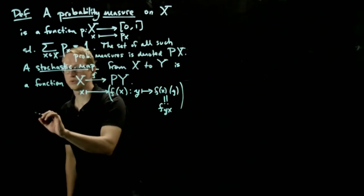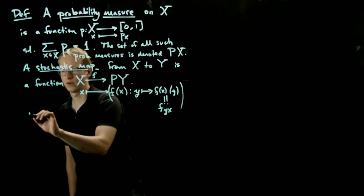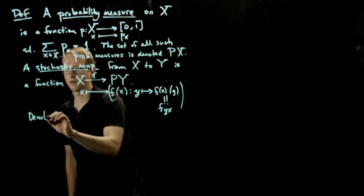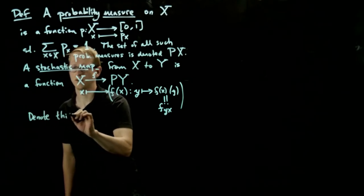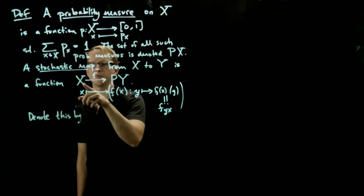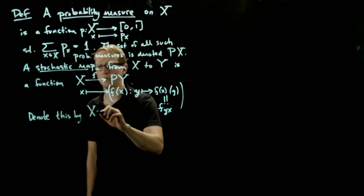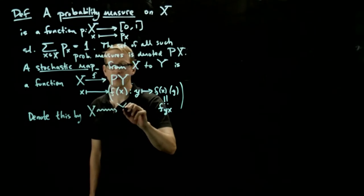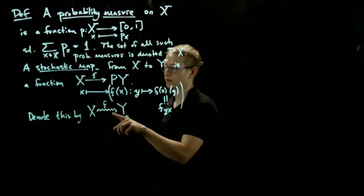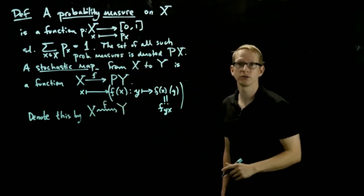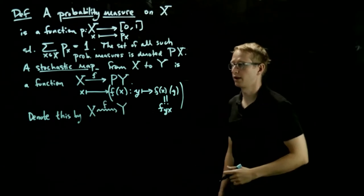We'll also introduce graphical notation for this. Instead of writing a map from X to PY, we will replace this by a map from X to Y, but we'll use slightly different notation for our arrows, and we'll make them squiggly arrows like this.